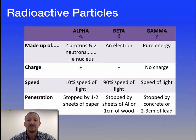You can see that the speed of light here varies. Alpha is a big sluggish particle, so actually goes quite slowly, only 10% the speed of light. The electron is a very fast particle, so as a result, it moves at 90% the speed of light. And gamma, being pure energy and being part of the electromagnetic spectrum, travels at the speed of light.